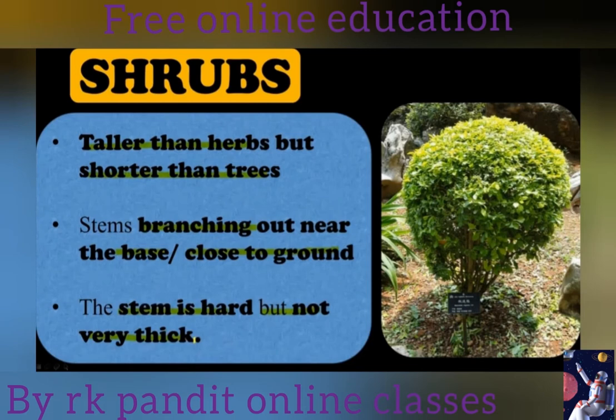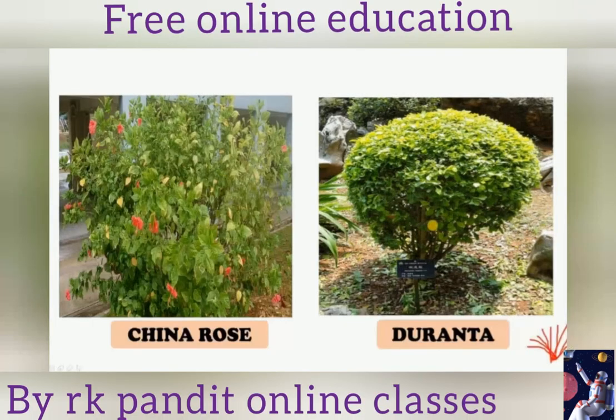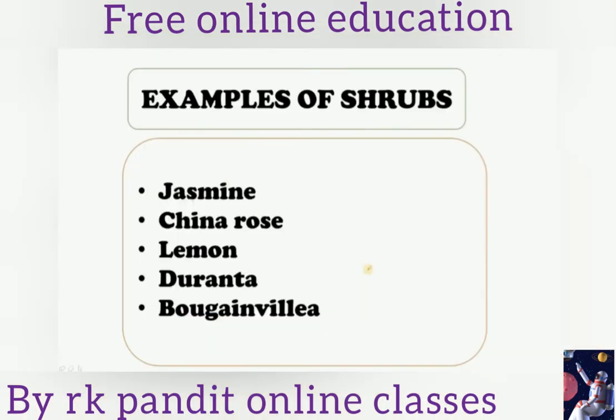Plants taller than herbs but shorter than trees are called shrubs. Examples include China rose, Datura, tea plant, jasmine, lemon, and Bougainvillea are examples of shrubs.